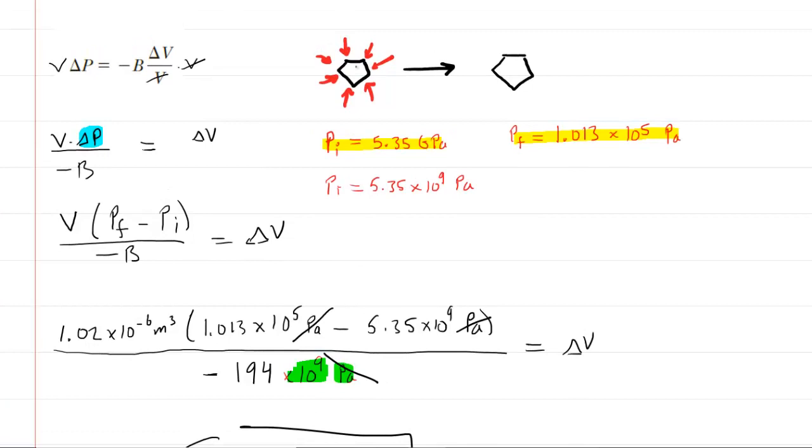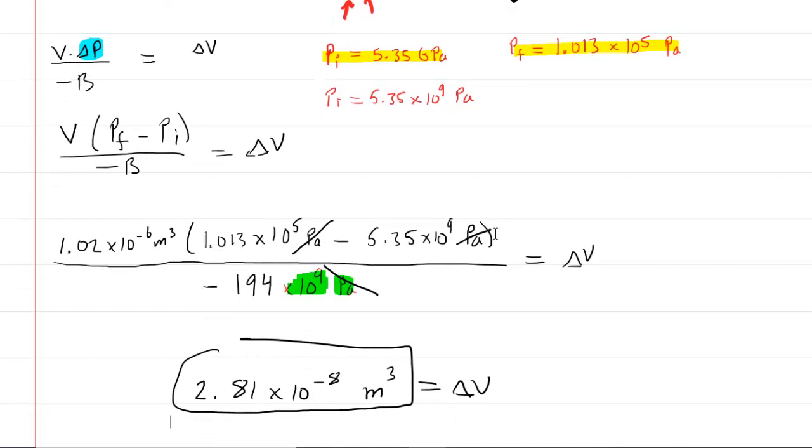Conceptually, if we take a diamond at a high pressure and then move it to conditions of relatively low pressure, then the diamond should expand by a small amount because of the reduction in the amount of external pressure. So the fact that it comes out positive should make some intuitive sense.